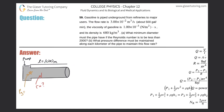Problem 59: Gasoline is piped underground from refineries to major users. The flow rate is 3×10⁻² cubic meters per second, the viscosity of gasoline is 1×10⁻³ N·s/m², and its density is 680 kg/m³. Part (a): What minimum diameter must the pipe have if the Reynolds number is to be less than 2000?